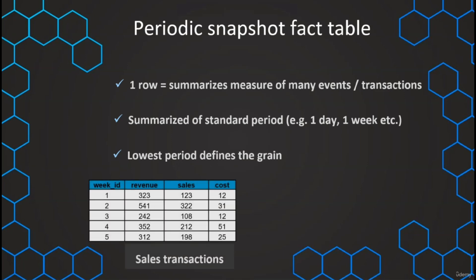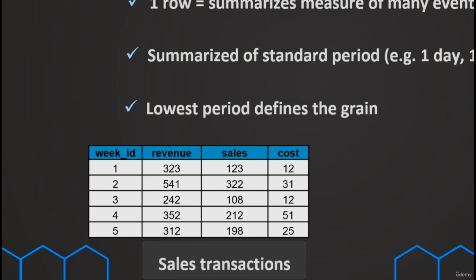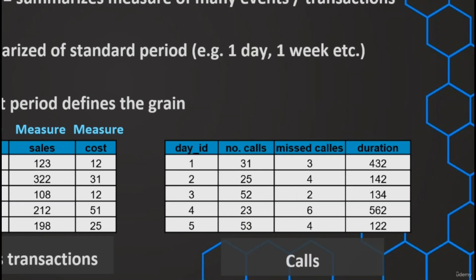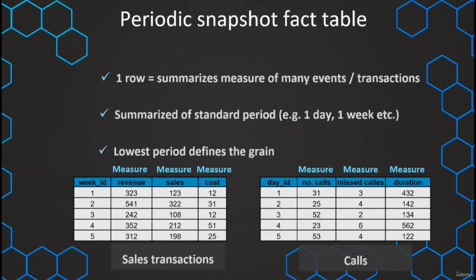An example is our sales transactions. There is usually a transactional table underlying this snapshot fact table. We take one period — in this case one week — and at the end of the week we take a snapshot: how much revenue, how many sales, how much cost did we have. You can see that these tables contain usually a lot of measures and not so many dimensions. Similarly for calls, we summarize the number of calls in a given day, the number of missed calls, and the total duration.